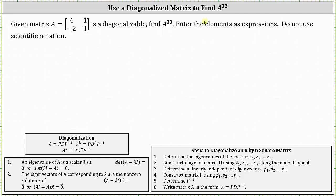We'll begin by diagonalizing matrix A by writing matrix A in the form of matrix P times matrix D times the inverse of matrix P. Once we have matrix A in this form, we can determine matrix A to the power of 33 by determining matrix P times matrix D raised to the power of 33 times the inverse of matrix P.